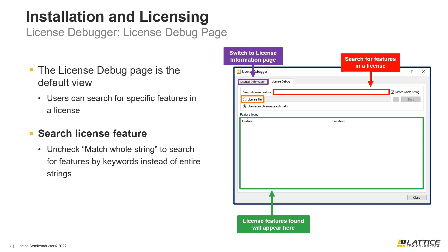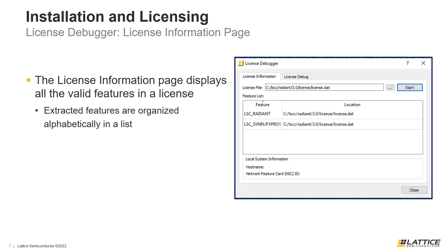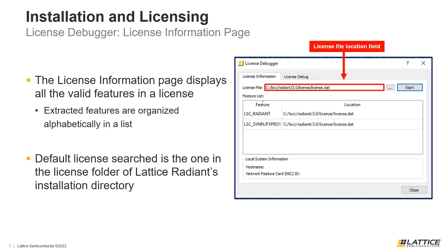The other tab in the license debugger tool is called License Information. Unlike the first tab, it displays all the valid features in a license at once. The only configurable option in this tab is the license being searched. By default, the license in Radiant's license folder is used. To search a different license, select the three dots next to the License File field, then click the Start button. Any valid features extracted will be displayed in an alphabetical list.